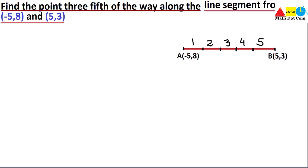Being 3/5 of the way means we find the point that divides the line into a 3 to 2 ratio — 3 parts on one side and 2 parts on the other side, with 5 total parts. We label this point C(x, y), which is 3/5 of the way along AB, dividing the line segment into 3 parts and 2 parts.